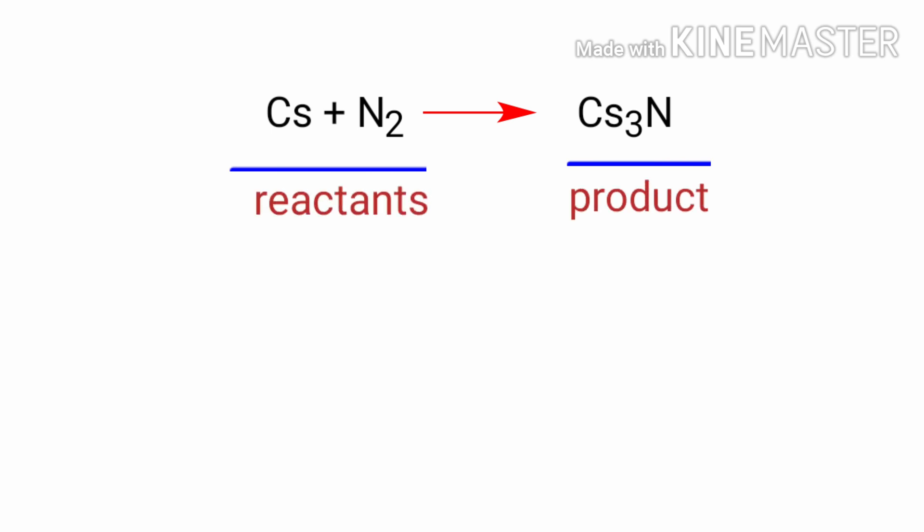In this equation, the reactants are caesium and nitrogen and the product is caesium nitride. If you look at this equation, the equation is not balanced.